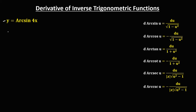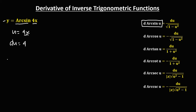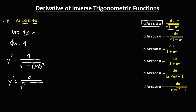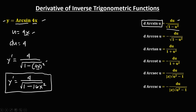For this given, y equals arcsin(4x). Here u is equal to 4x, and the derivative of u, or the derivative of 4x, is 4, so du equals 4. Using the arcsin formula, y prime equals du over the square root of 1 minus u squared, which gives us 4 over the square root of 1 minus 16x squared. This is the derivative of arcsin(4x).